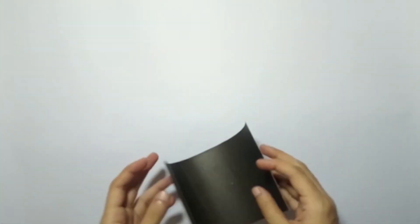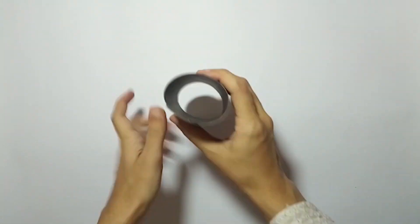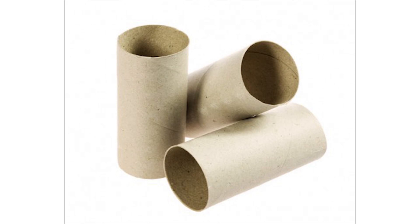Take a rectangle piece of chart paper. Apply glue on its one side and roll it like a tissue roll. If you have tissue rolls, you can use them as well.